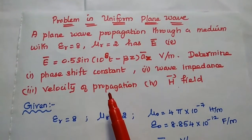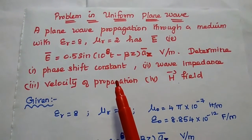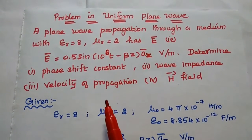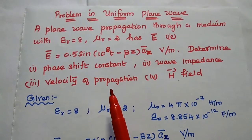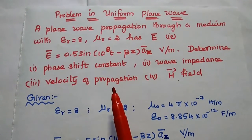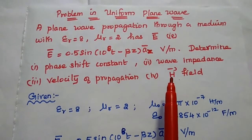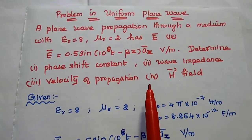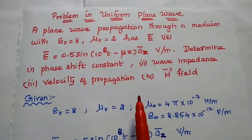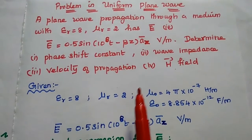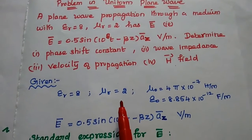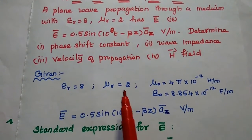The problem asks us to determine the phase shift constant, wave impedance, velocity of propagation, and the magnetic field. First, we have to write the given data from the problem.